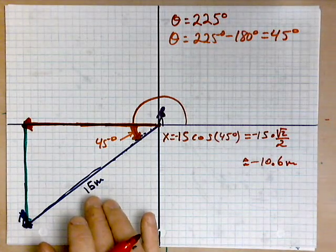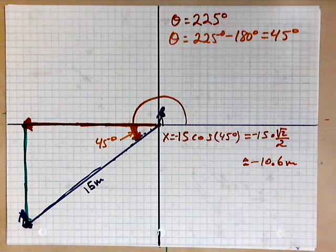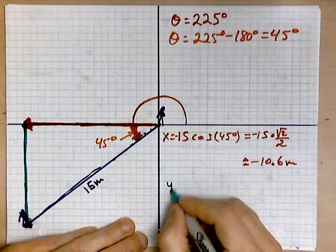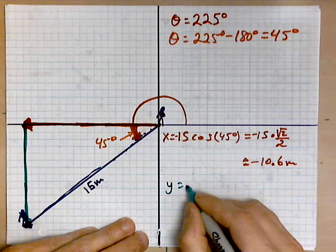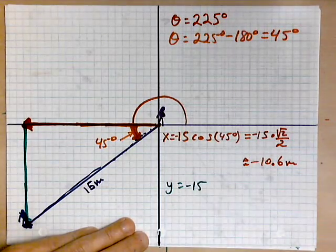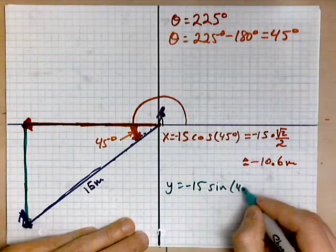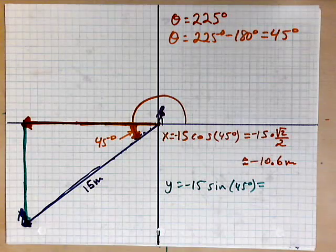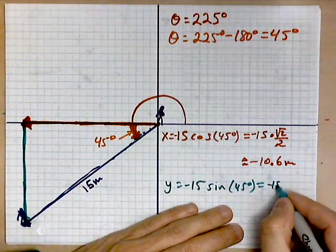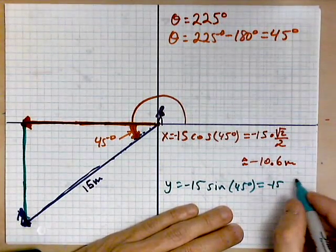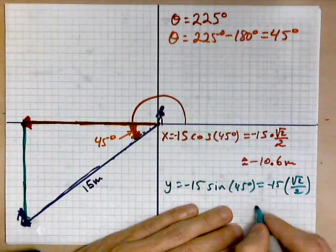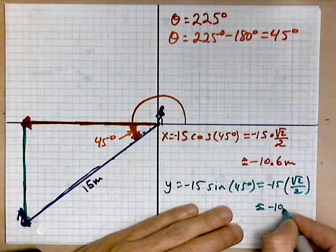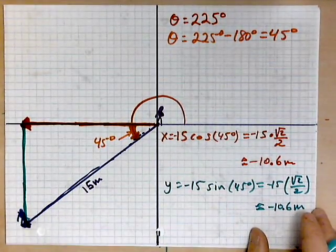Now in the y direction, something similar holds, and all we are doing is using the sine function. So we have y equals negative 15 sine of 45 degrees, so this comes out to be negative 15 times the root of 2 over 2, which is again about negative 10.6 meters.